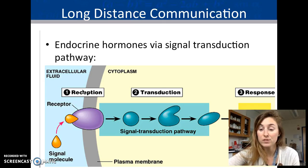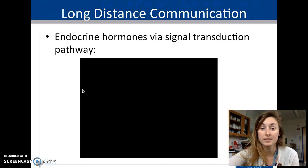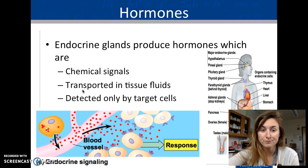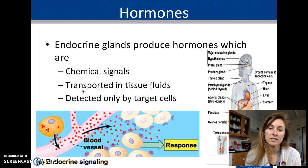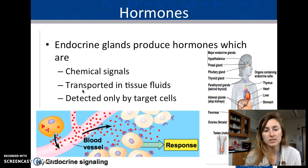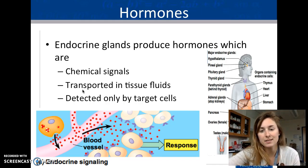Long distance communication involves signal transduction. Now that we've gone through these topics, we should see that signal transduction comes up constantly. Endocrine glands use long distance signaling — they are chemical signals transported through fluids to reach a target cell.